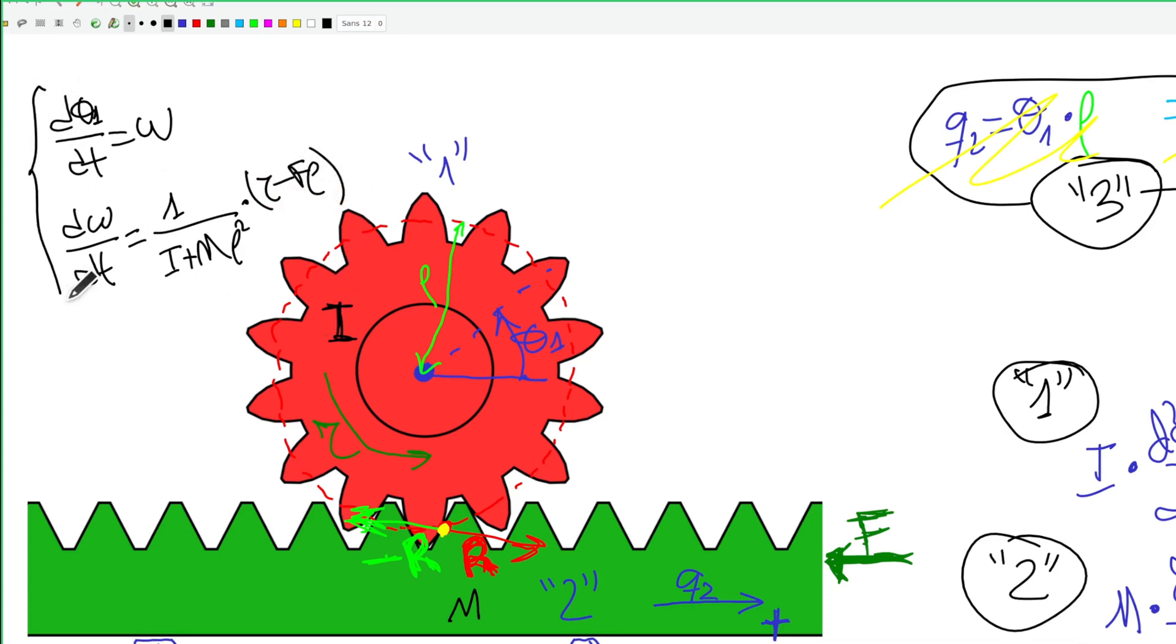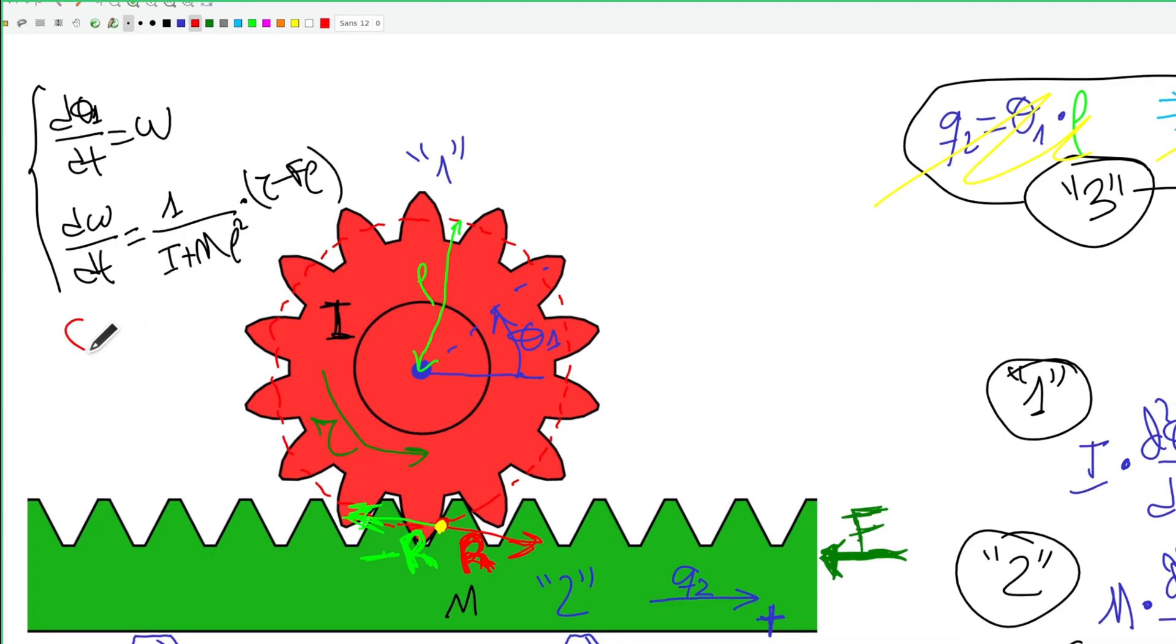And this is a perfectly solvable system of ordinary differential equations with two inputs tau and f, and two states angular position and angular speed. So this will be the state equations and output equations as I have three unknowns.